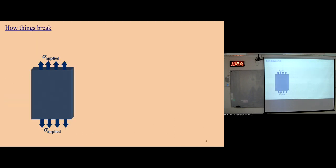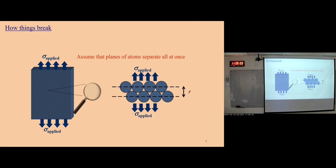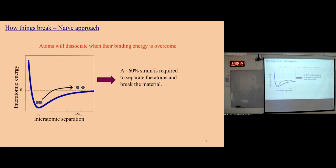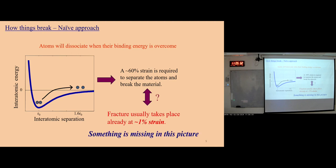Before that, we need to understand how things break. When we apply shear stress on materials, if we assume the plane of atoms separates all at once, the applied stress should approach the atomic bonding strength. In this naive approach, atoms dissociate when their bonding energies are overcome, giving almost 60% strain to separate atoms. But that's not correct, because fracture usually takes place already at 1% strain. So something is missing.